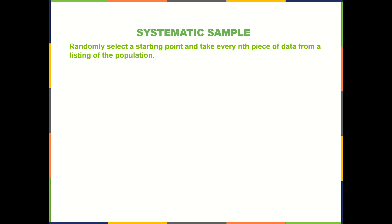Systematic sample: randomly select a starting point and take every nth piece of data from a listing of the population. This is not the simple random sample — this is another type of random sample called systematic.